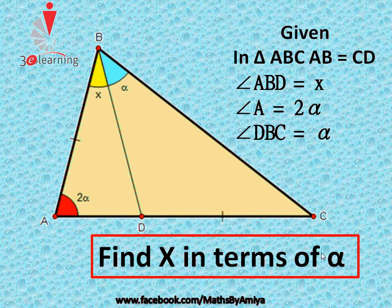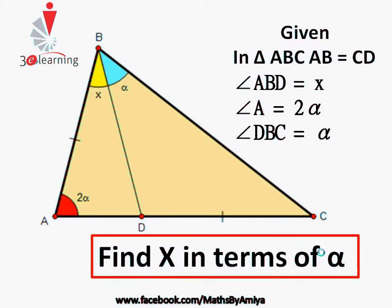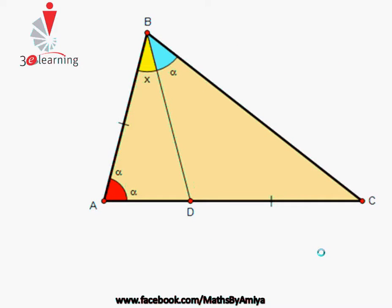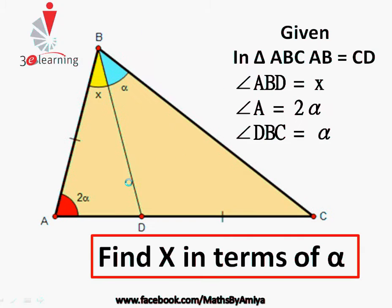We will do just one construction and use some basic properties of geometry to solve this question. So we have a triangle given with the values stated. The construction I am going to do is bisect angle A.